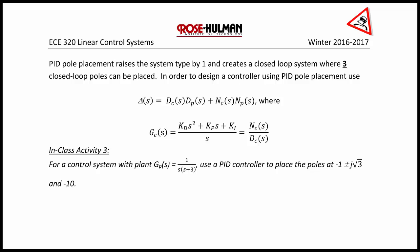In order to design a controller using PID pole placement, use delta of s is equal to dc dp plus nc np, which is the characteristic equation,